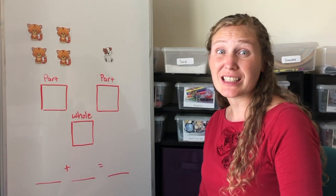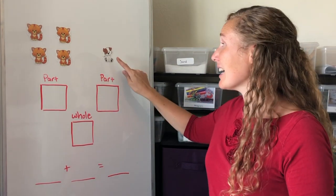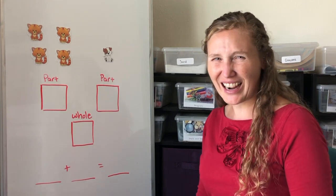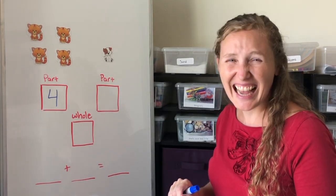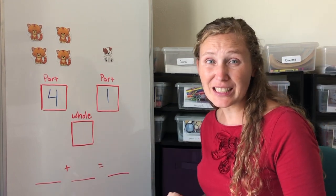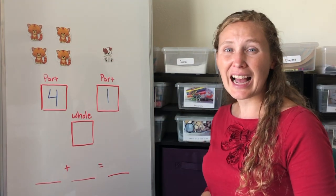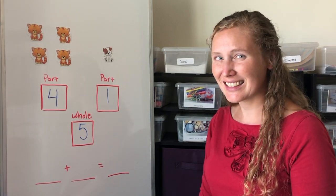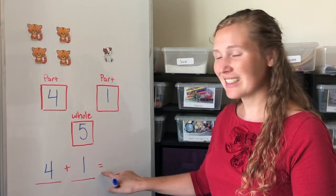What can you tell me about my animals now? I have one, two, three, four cats, and one dog. So this part of my animals — the part with cats — has four. And this part, my part with dogs, has one. So a four part and a one part together makes how many in all? Let's count: one, two, three, four, five. I have five animals in all. Can you help me write an addition sentence? This part is four plus a part of one equals five.